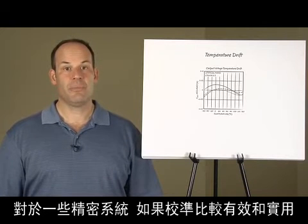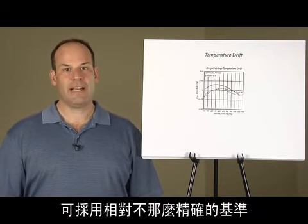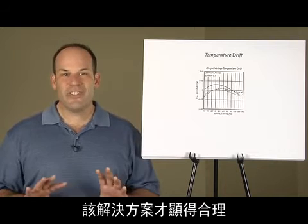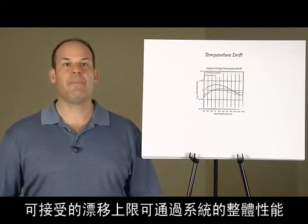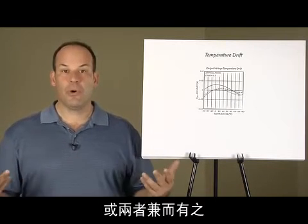For some precision systems a relatively inaccurate reference may be employed if calibration is effective and practical. This is only a reasonable solution if the system does not drift significantly. The limit of acceptable drift may be set by overall system performance, acceptable length of time between calibration, or both.